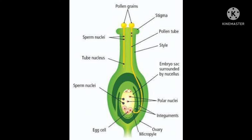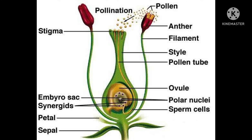Here is a figure. At the top, the pollen grain stands, then it goes to the ovary through the help of the style, then it gets fused there, and that complete process is known as fertilization.